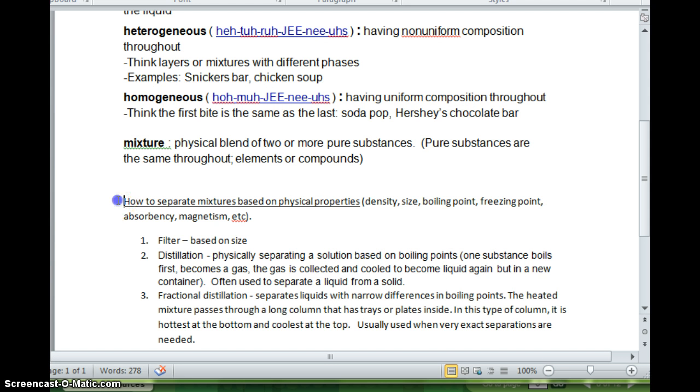So I added to our notes under how to separate mixtures based on physical properties, and then I gave some examples of physical properties, density, size, boiling point, freezing point, absorbency, and magnetism. We have filtering based on size, and we have distillation, physically separating a solution based on boiling point. One substance boils first, becomes a gas. The gas is collected and cooled to become liquid again, but in a new container. Often used to separate a liquid from a solid as well.